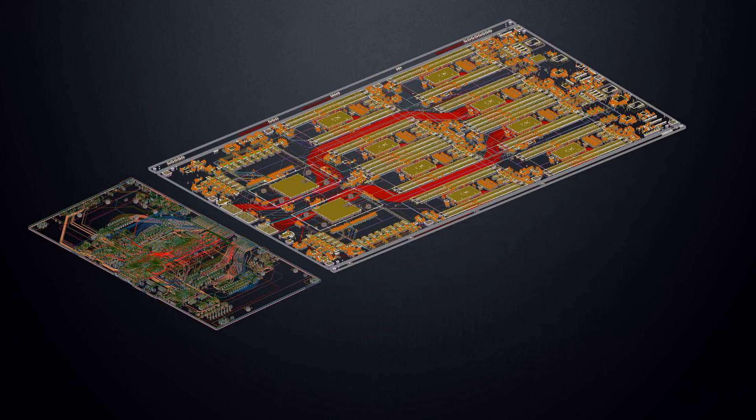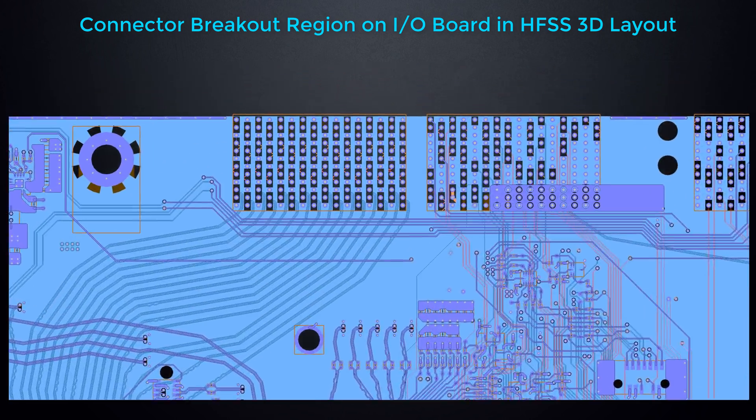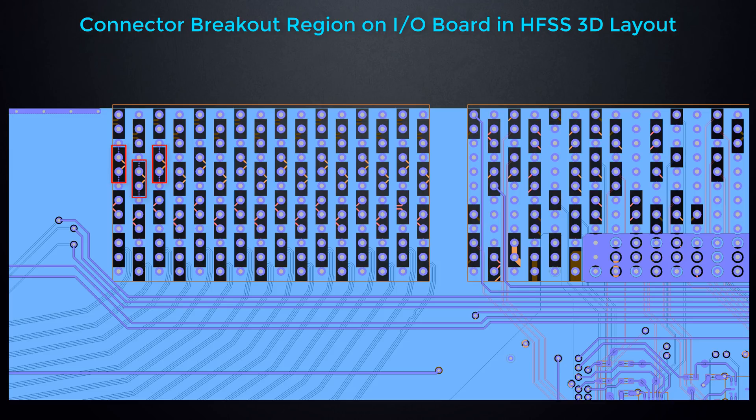For larger simulations, you can connect I.O. boards to PCBs in HFSS 3D layout and invoke this feature. At the connector placement section of this I.O. board, the signals travel through a dense via cluster.